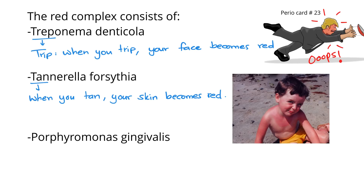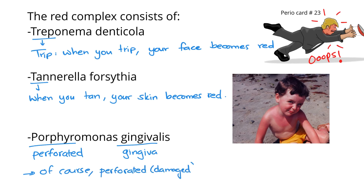Next, Porphyromonas gingivalis. Now, this sounds like a very complicated name, so we'll just give it a nickname. 'Porphyro' will be 'perforated' and 'gingivalis' will be 'gingiva'. So Porphyromonas gingivalis is basically perforated gingiva. What do you think perforated gingiva looks like? Of course, perforated or severely damaged gingiva will be red — super inflamed and bleeding if it's perforated.